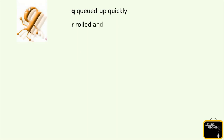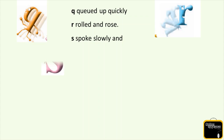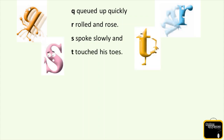Q queued up quickly. R rolls and rolls. S speaks slowly. And T touches his toes. Now look at the picture - Q is in a hurry and trying to stand in a queue. And R is rolling, rolling and rolling and then standing, then rolling again. And S speaks slowly - shh, speak slowly. And T is trying to touch his toes.